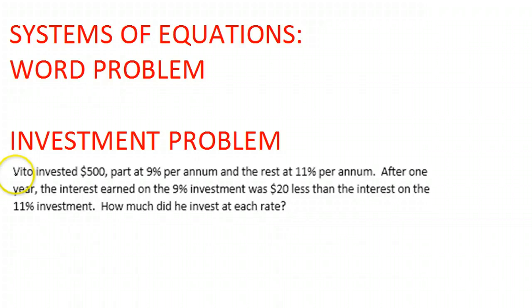So the problem is, Vito invests $500, part at 9% per annum, which means per year, and the rest at 11% per annum. After one year, the interest earned on the 9% investment was $20 less than the investment on the 11% investment. How much did he invest at each rate?